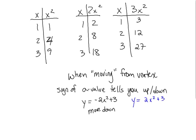Quick review from last time, we had our pattern for x and x squared. Remember, that's 1, 1, 2, 4, 3, 9. x and 2x squared had the pattern 1, 2, 2, 8, 3, 18. And then lastly, our pattern of x and 3x squared would give us a movement of 1, 3, 2, 12, and 3, 27.